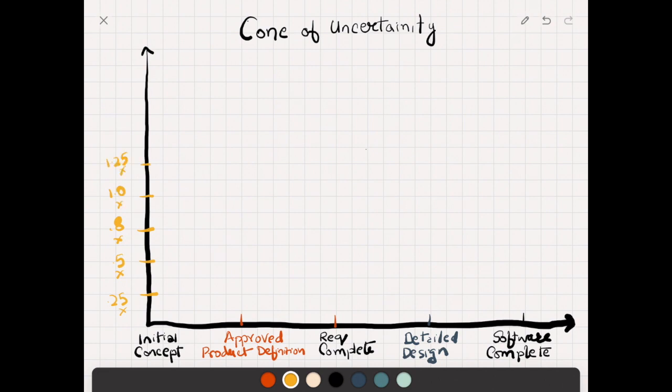And a detailed study was done on a lot of software. From the data of different software projects, they found out the accuracy of the estimation was something like a cone. Let me draw the uncertainty.